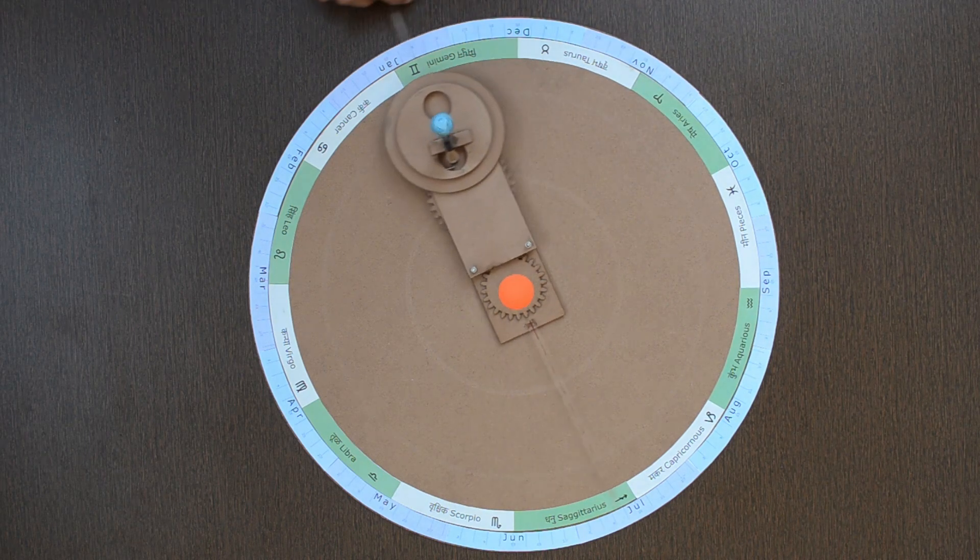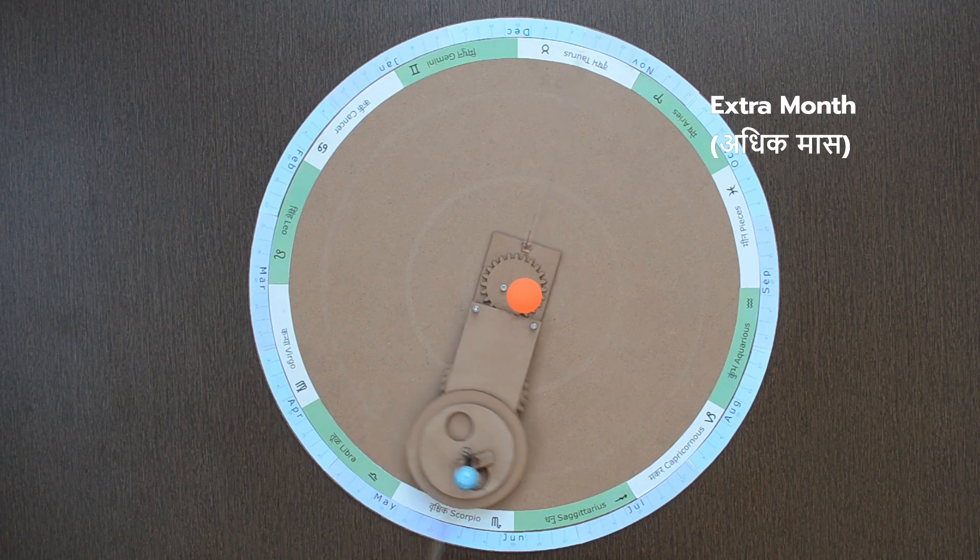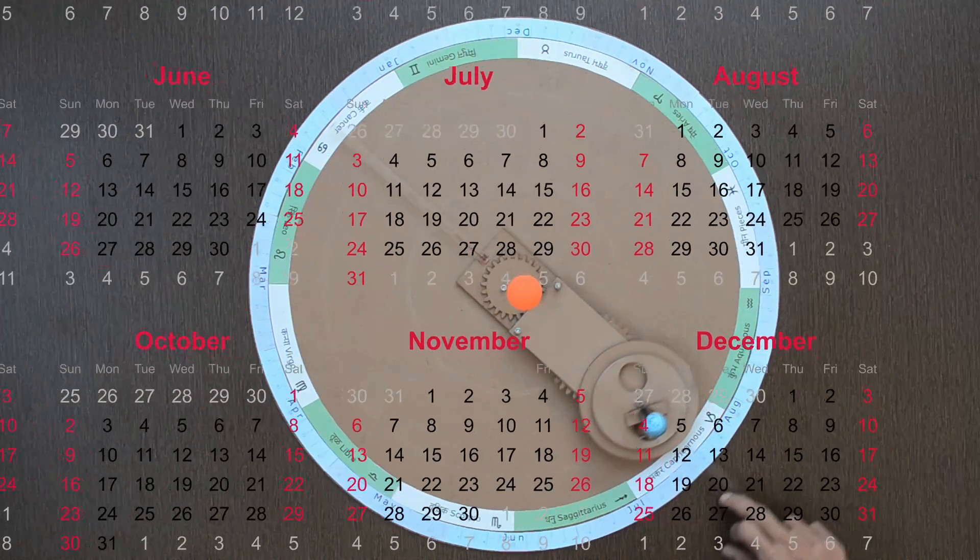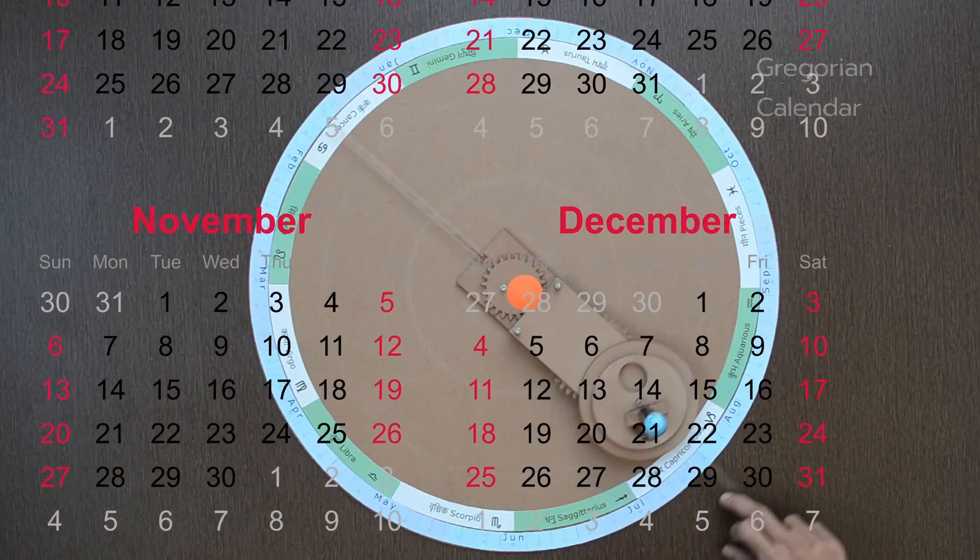This is done by adding Adhikmas or extra month every 33 months. Months familiar to us are as per the Gregorian calendar, which is based on the solar cycle.